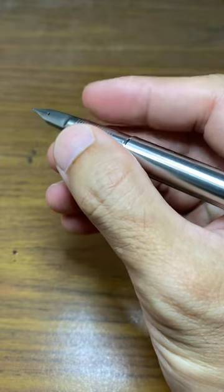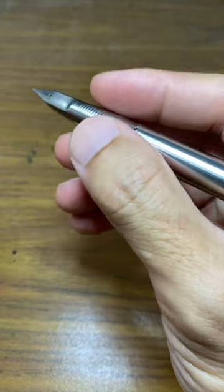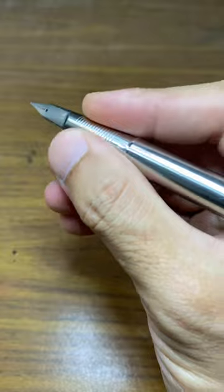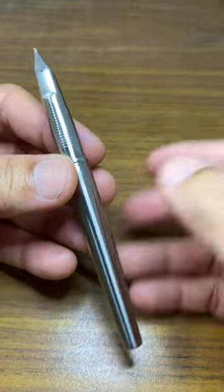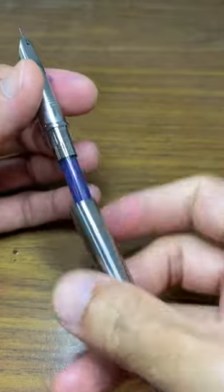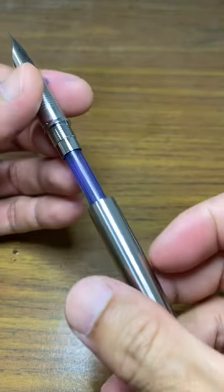Some people complain that the Murex is too smooth, too slick to hold, so this feature will definitely help. Unscrewing the body reveals the filling system. It's a cartridge fill system.